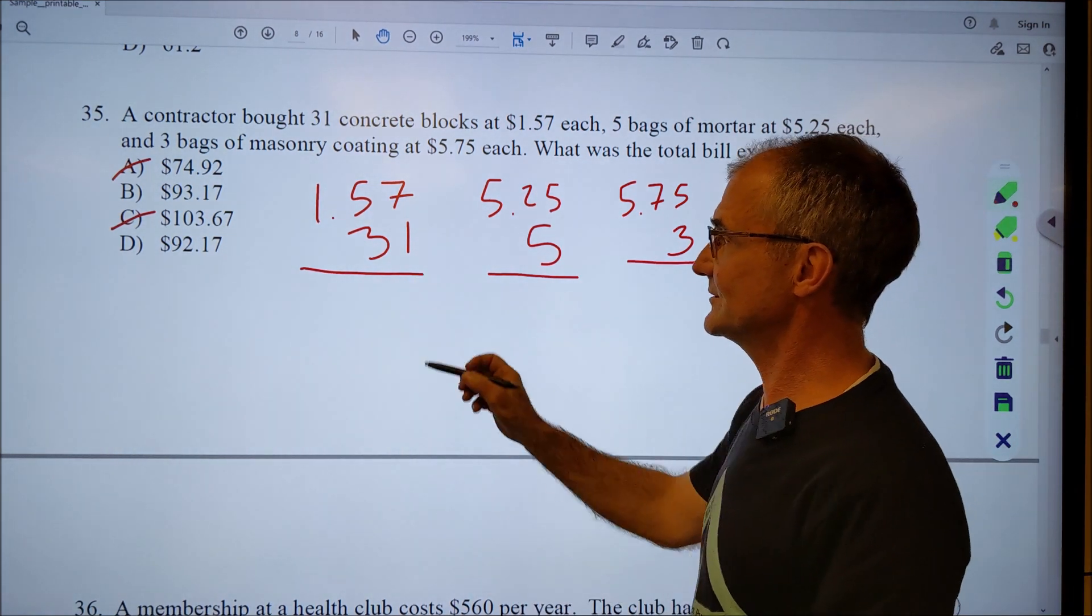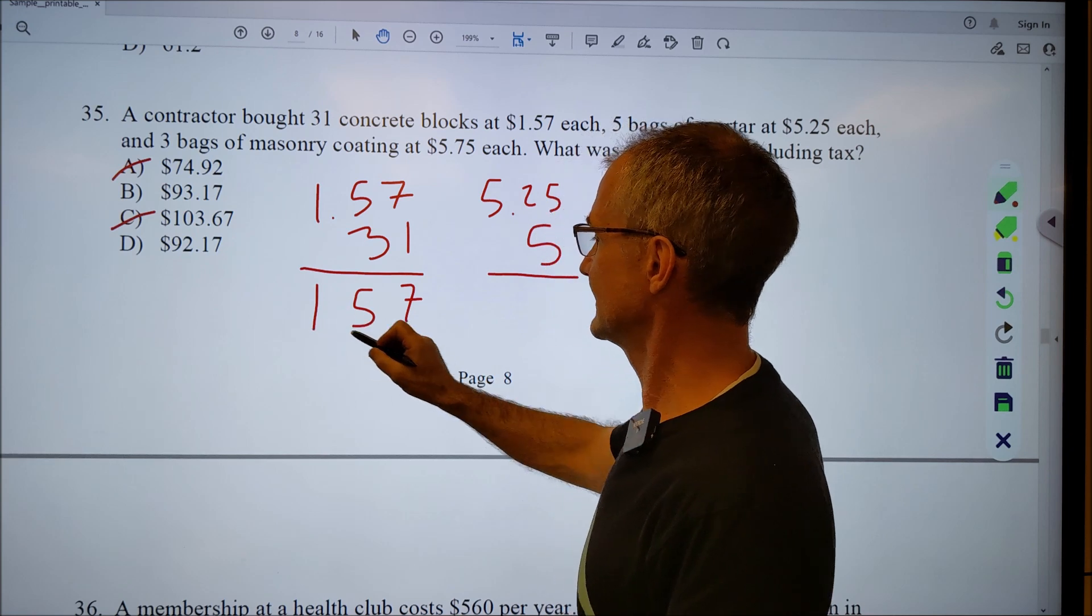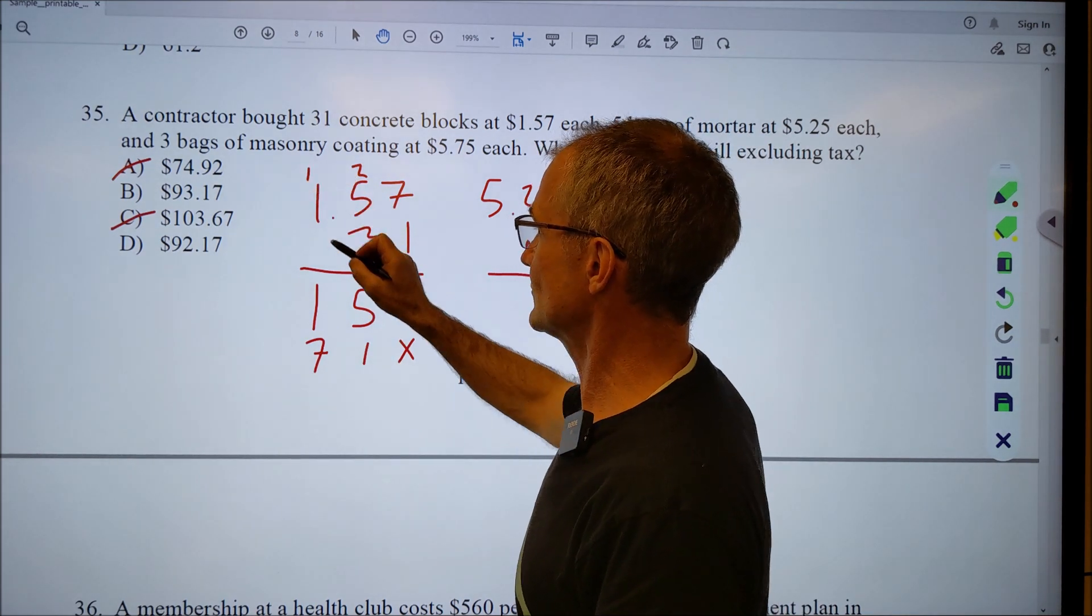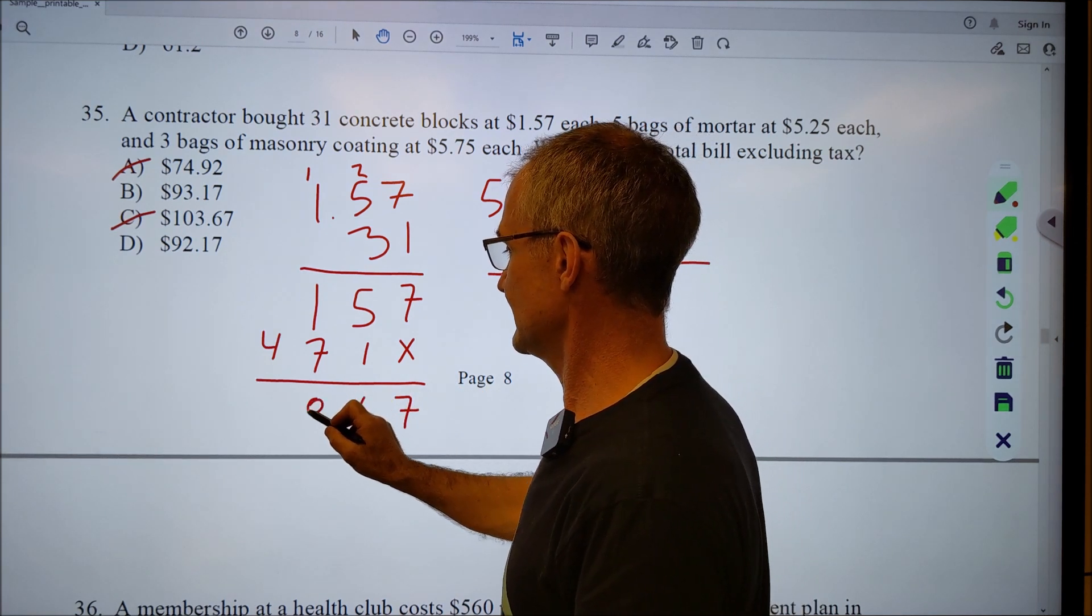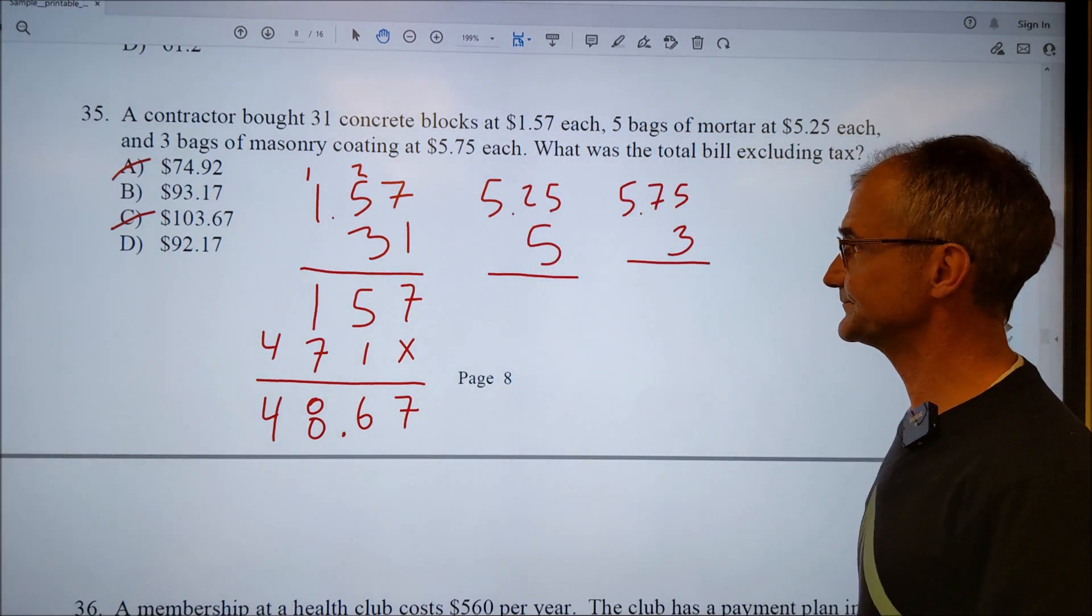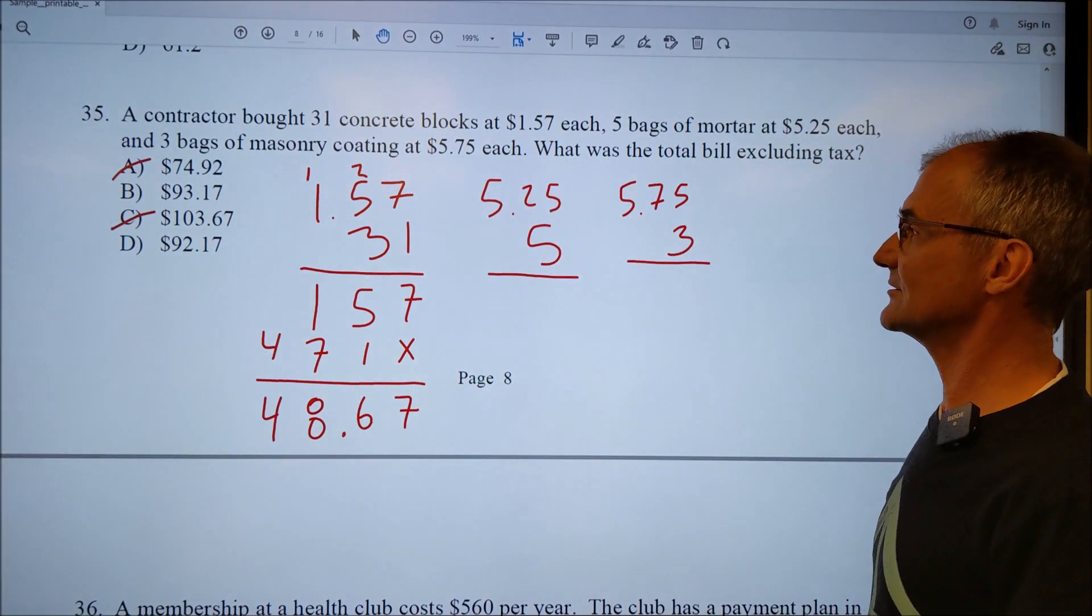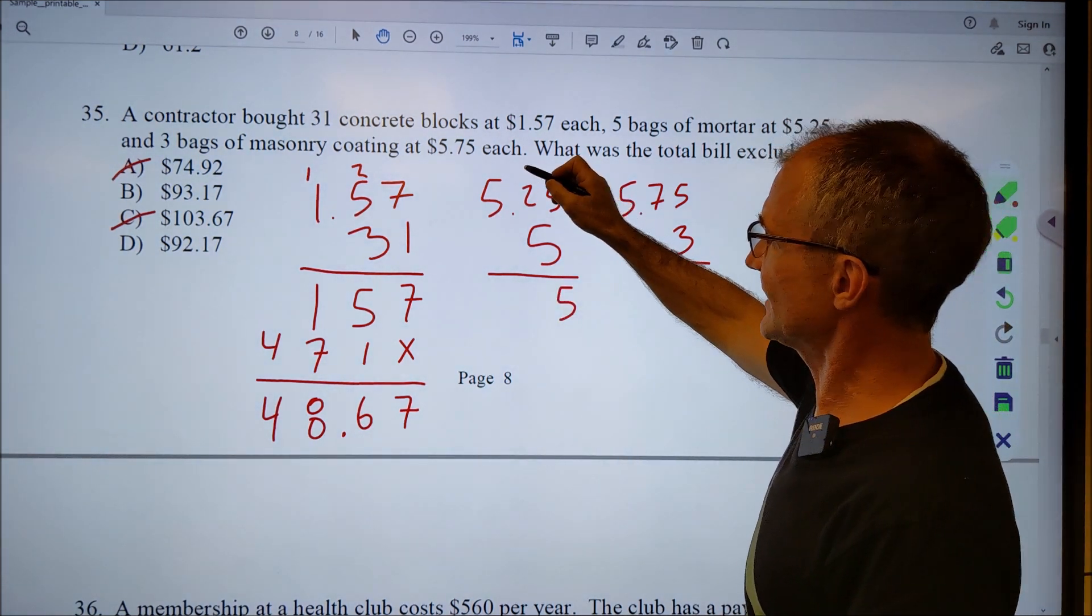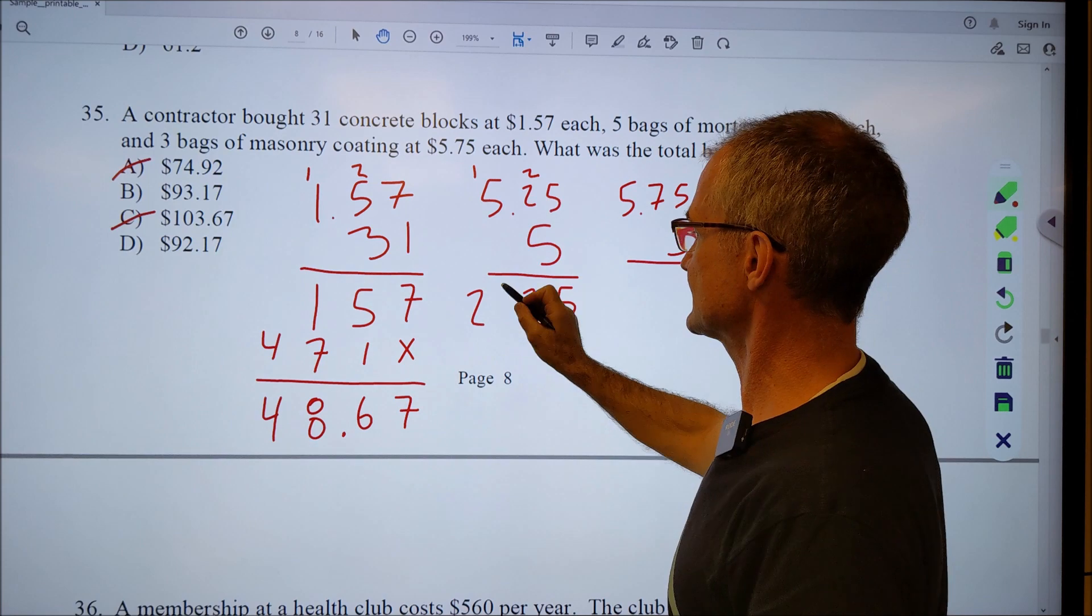So one fifty-seven times thirty-one. I'm going to do the one times the seven, one times the five, one times the one. Got a placeholder here. Three times seven, twenty-one. Carry the two, seventeen. Carry the one, three, and four. I add that together, it gets seven, six, eight, four. I'm over two decimal places, so it's forty-eight, sixty-seven. Over here, I might see this as twenty-five plus a dollar twenty-five, twenty-six, twenty-five. Or I could just multiply through. Five times five, twenty-five. Carry the two. Ten and a two, it's twelve. Carry the one. Twenty-five, twenty-six. Again, two decimal places over. So I'm going to have twenty-six, twenty-five.